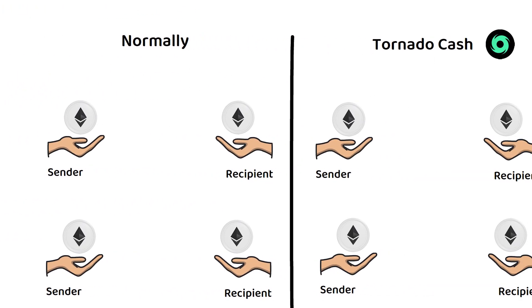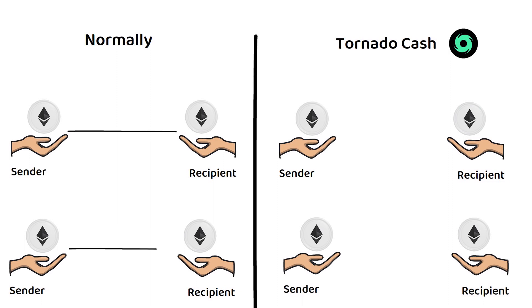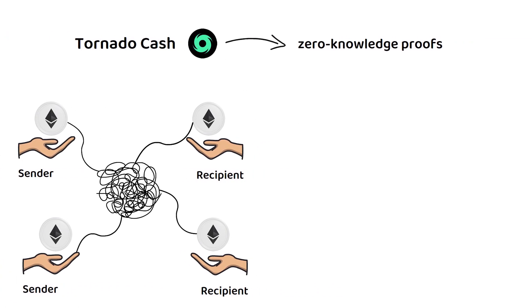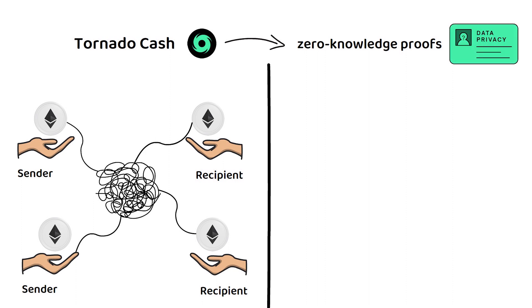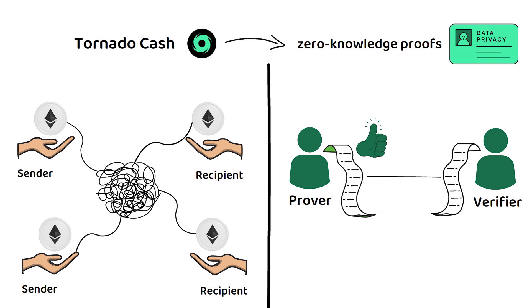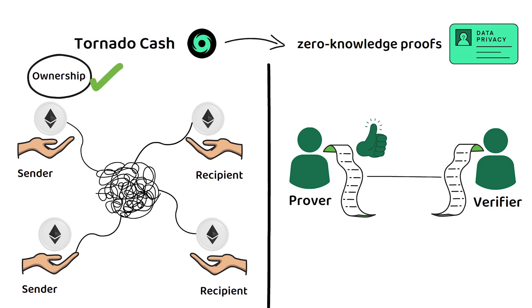The primary purpose of Tornado Cash is to break the linkability between sender and recipient addresses, making it more difficult to trace the flow of funds. Tornado Cash utilizes a concept known as zero-knowledge proofs to preserve privacy. Zero-knowledge proofs allow one party, known as the prover, to prove the validity of a statement to another party, the verifier, without revealing any additional information beyond the validity of the statement itself. In the context of Tornado Cash, zero-knowledge proofs are used to demonstrate the ownership of funds without disclosing the sender's and recipient's addresses.